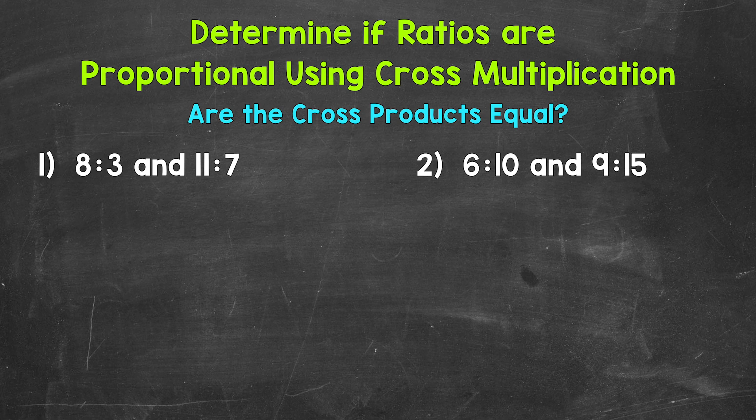Let's jump into number one, where we have 8/23 and 11/27. When it comes to checking if two ratios form a proportion using cross multiplication, all we need to do is cross multiply and see if our cross products — the numbers we get once we multiply —